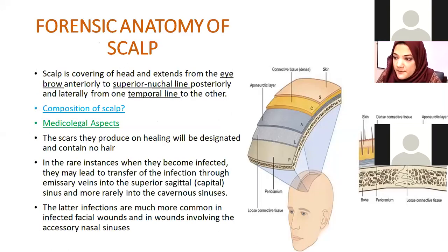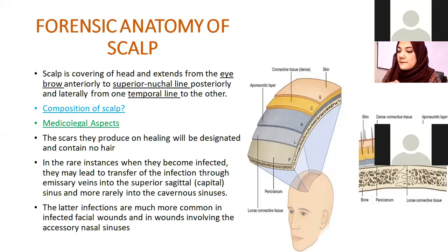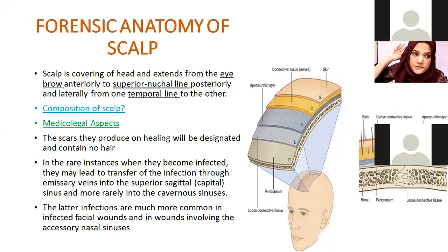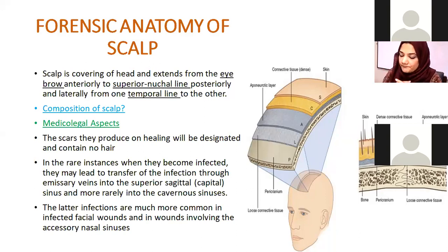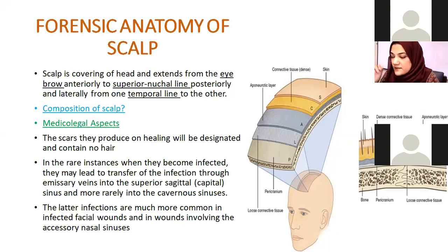The scalp extends anteriorly from the eyebrow to posteriorly to the superior nuchal lines, and laterally to the temporal lines — that is the extent of the hair-bearing scalp. The scalp is composed of five layers: skin, connective tissue, the epicranial aponeurosis (epineurotic layer), loose connective tissue, and the pericranium. The skin, which is the superficial layer, consists of hairs and sebaceous glands and is abundant in nature.